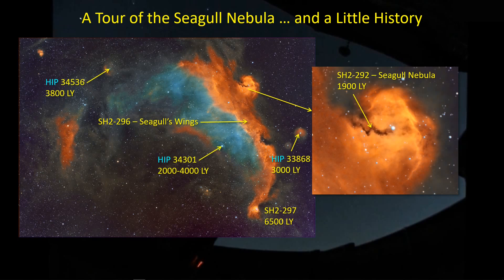If I call up a couple of stars here, they're all about 2,000 to 4,000 light years away — roughly 3,800 light years. So that gives us a sense that whatever we call the Seagull Nebula is about 3,500 light years away from Earth.